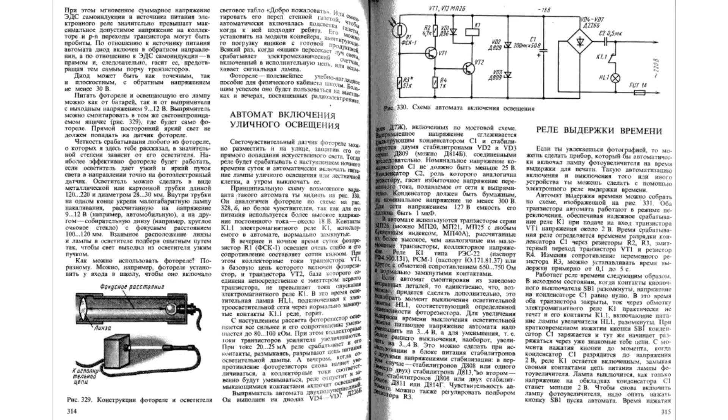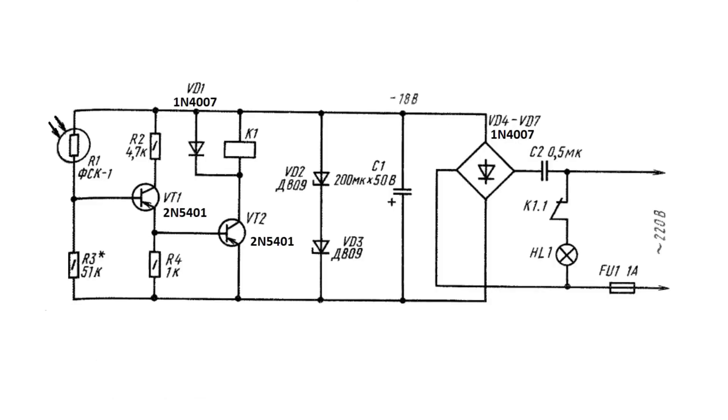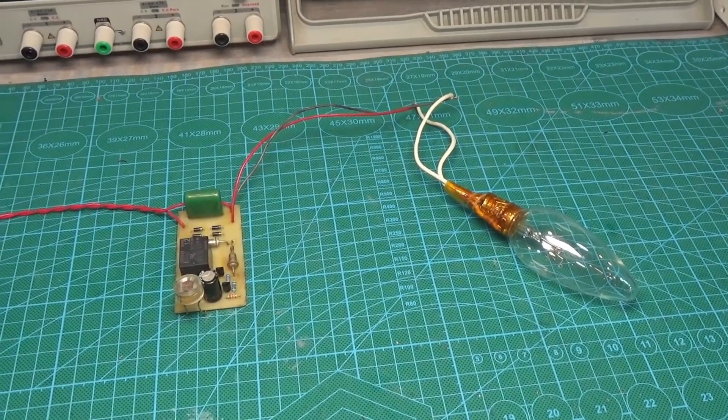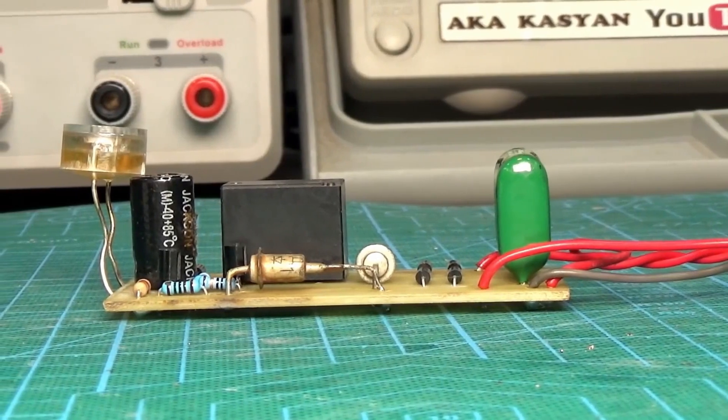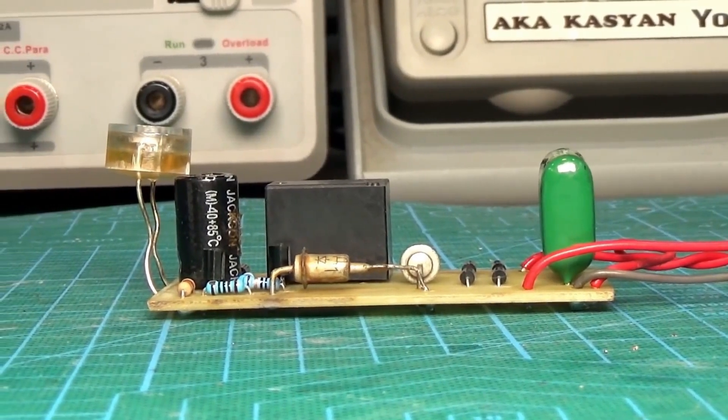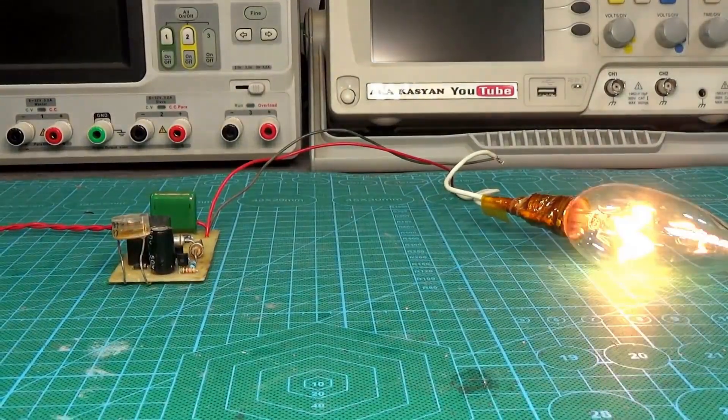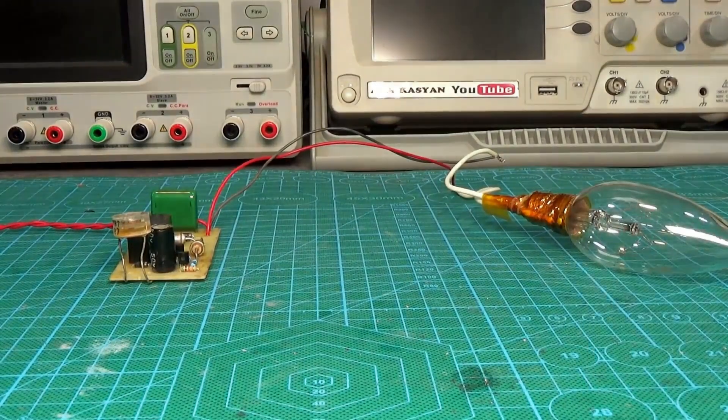Automatic street lighting switch. The circuit is also from Borisov's book, 8th edition, 1992, page 315. I replaced some components with others that are more commonly used. To be honest, I debated for a long time whether to show this circuit or not, but it's worth it for informational purposes. Important! This circuit is dangerous because it is not galvanically isolated from the mains, presented for informational purposes only.